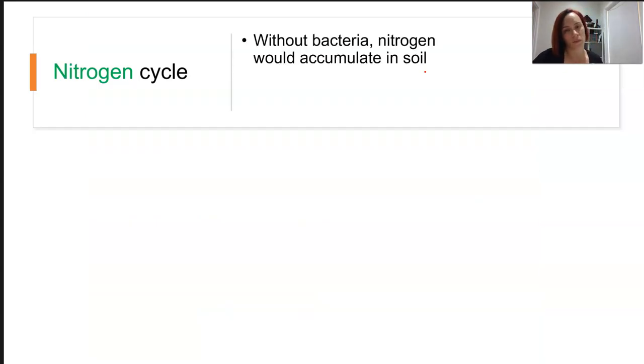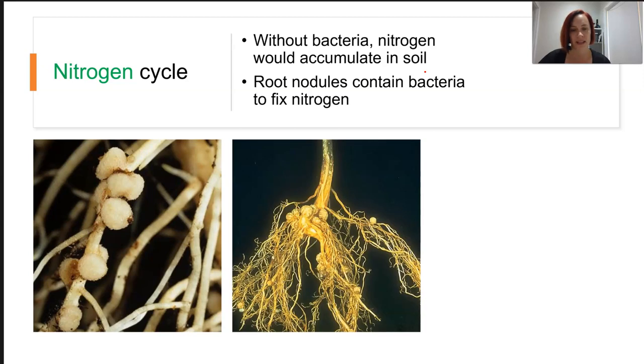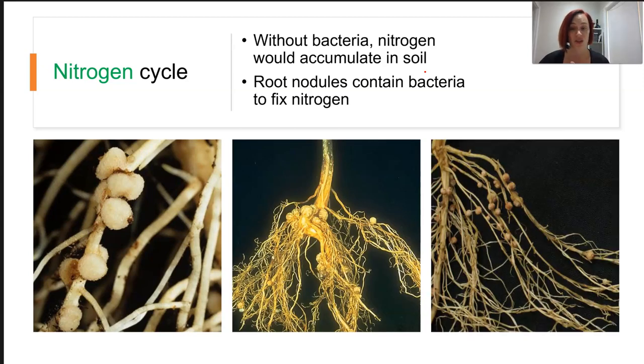Now, the nitrogen cycle would be absolutely nowhere without bacteria. Without them, the nitrogen would accumulate in the soil. It would not be able to be turned into an accessible form. So there's a really nice adaptation made by some plants where they use these nitrifying bacteria and house them in nodules on their roots. So this way, the bacteria receive a bit of protection, and the sugars are from the plants, photosynthesis, essentially, and the plants readily receive access to source of nitrates.